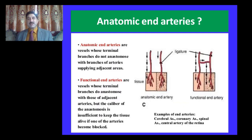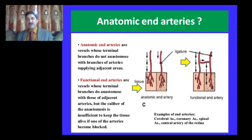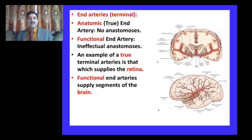What are anatomic end arteries? Anatomic end arteries are defined as vessels whose terminal branches do not anastomose with branches of arteries supplying adjacent areas. As shown in this diagram, two anatomic territories are supplied by two arteries which do not anastomose with each other, thus qualifying as anatomic end arteries. Functional end arteries are vessels whose terminal branches do anastomose with those of adjacent arteries, but the caliber of the anastomosis is insufficient to keep the tissues alive if one of the arteries becomes blocked. As shown in the diagram, two arteries anastomose with each other, but this anastomosis is not adequate enough to provide collateral circulation at the time of need. Thus anatomic end arteries are true end arteries with no anastomosis, whereas functional end arteries have an anastomosis that exists but is ineffectual.